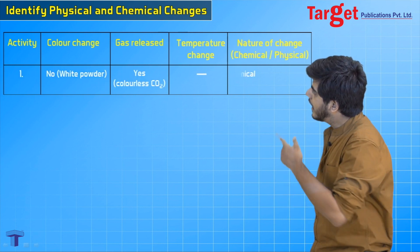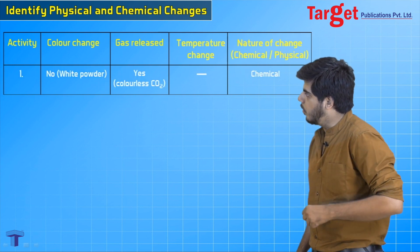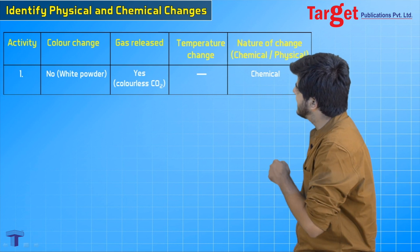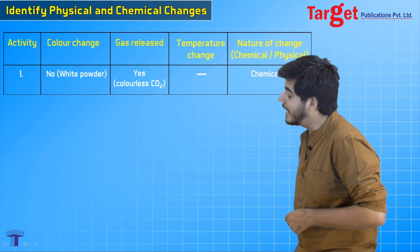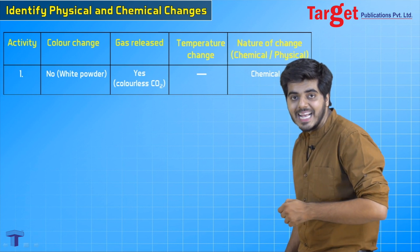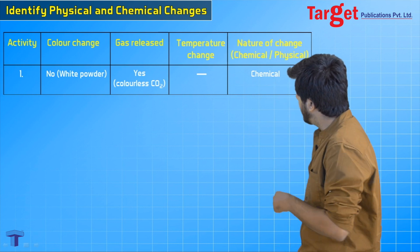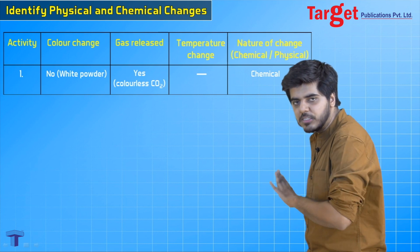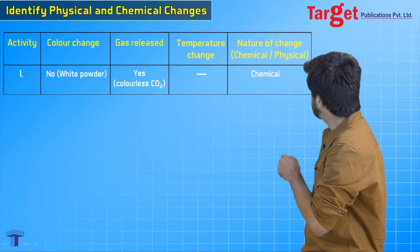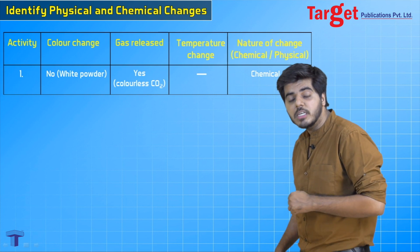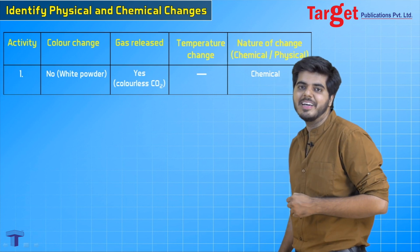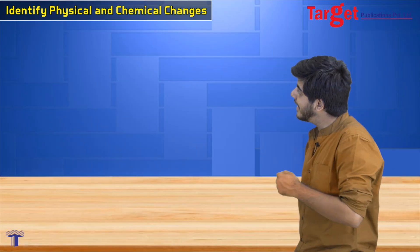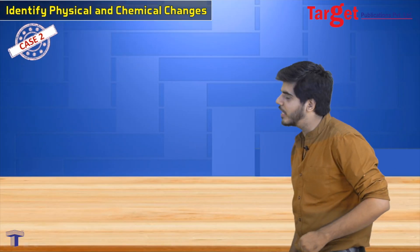In activity one: color change — no, it remains a white powder. Gas released — yes, colorless CO2 gas is released. Temperature change — no, we did not measure temperature and there was no temperature change. Nature of the change — it is a chemical change.